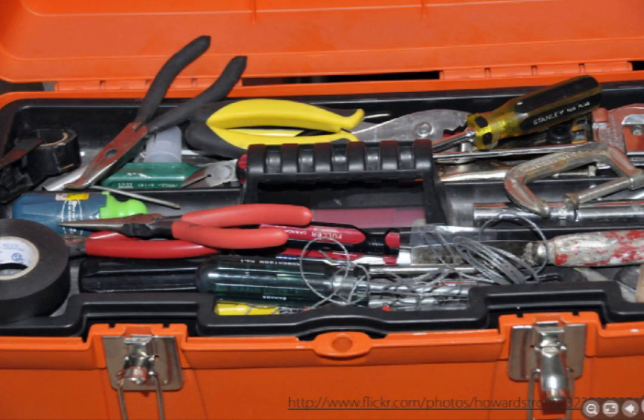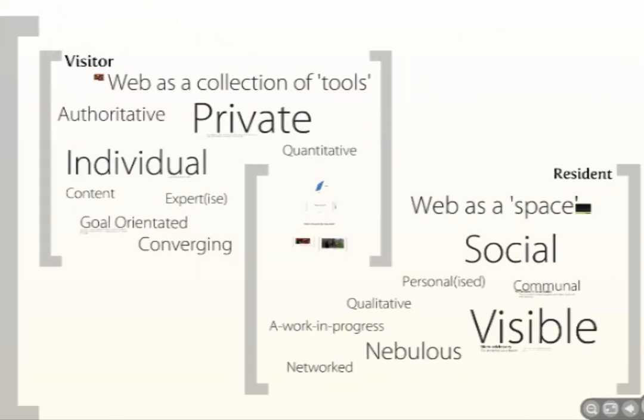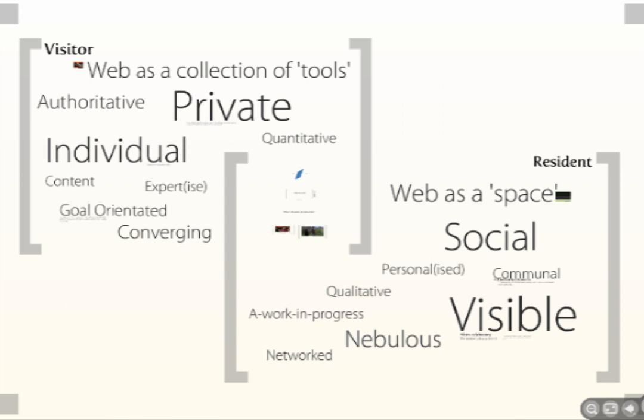The visitor sees the web as a collection of tools; the resident sees the web as a space — a social space to mill around in. The visitor sees it like a relatively untidy toolbox: they have something they want to achieve, they rummage around in the toolbox, find the tool they need, use it, and put it back again. That comparison — the resident milling around in a sunny park on a Sunday afternoon versus the visitor rummaging in a toolbox — is the most useful way of understanding the Visitor-Resident principle.